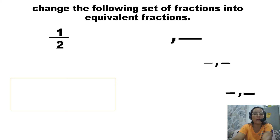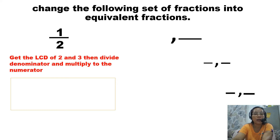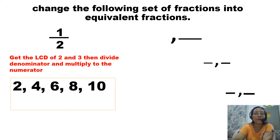Let's try 1 half. Get the LCD first of 2 and 3. Why 2 and 3? Because the partner fraction for 1 half has a denominator of 3. So let's have first the 1 half — get the LCD for the numerator, then divide the denominator and multiply to the numerator. Let's begin with multiples of 2. The denominator is 2 for 1 half. So let's list down the multiples of 2: 2, 4, 6, 8, 10.